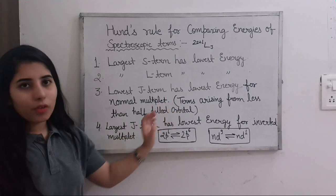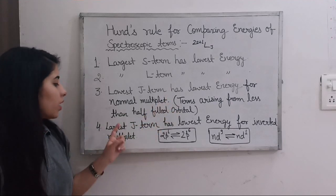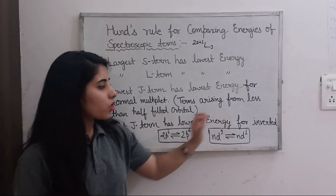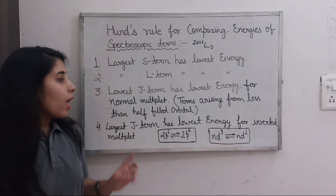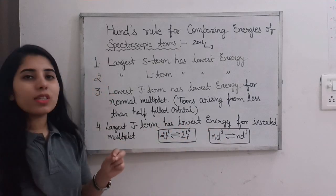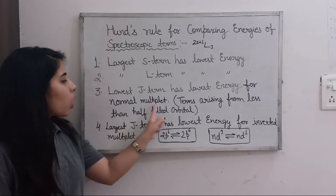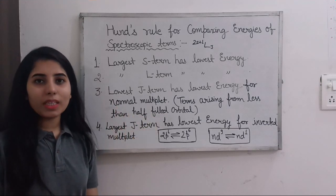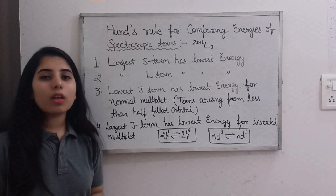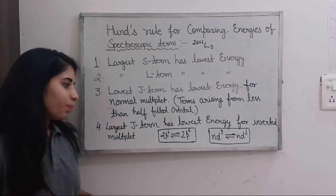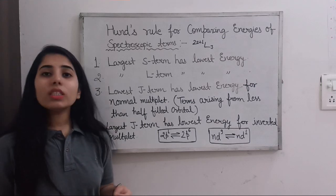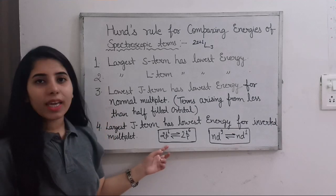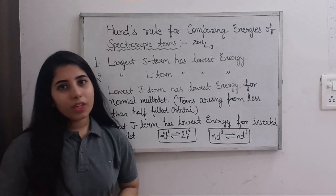The rule for inverted multiplets is: the largest J term has the lowest energy. So we have discussed two types: normal multiplets and inverted multiplets. Let's now clarify what we mean by normal and inverted multiplets.